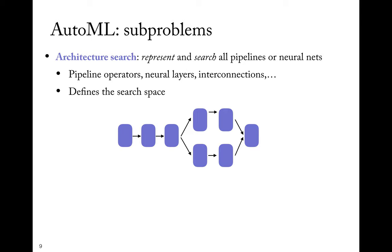We can subdivide this problem into three subproblems. First is architecture search — how can we represent architectures, typically as a graph with different layers, operators in a pipeline, or as a neural architecture with branches and concatenations. We also need a way to search the possible space of pipelines: if the architecture can be any graph, we need a way to search the space of all possible graphs.